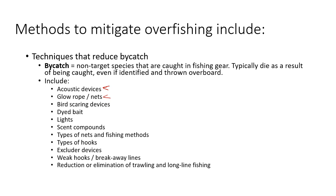Bird-scaring devices prevent birds from becoming entangled in nets while trying to get at trapped fish — whether using noise or visual cues. Dyed bait is similar to glow ropes: a phosphorescent or other dye either attracts a target species or scares away non-target species. Lights, scent compounds, the type of nets and fishing methods, and the type of hooks used can all be adjusted to minimize bycatch.